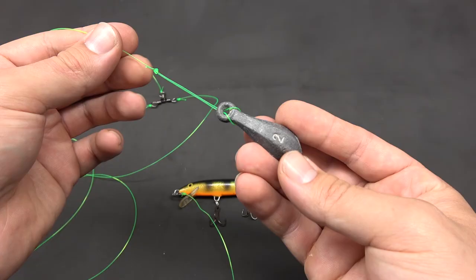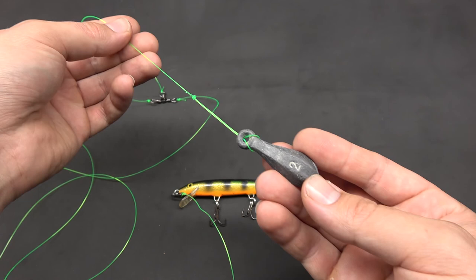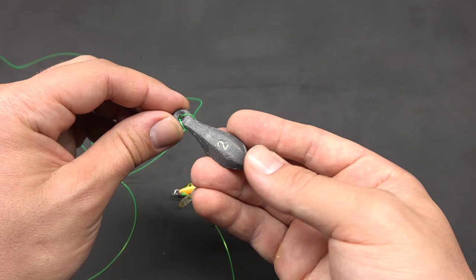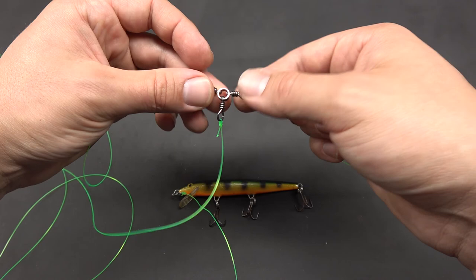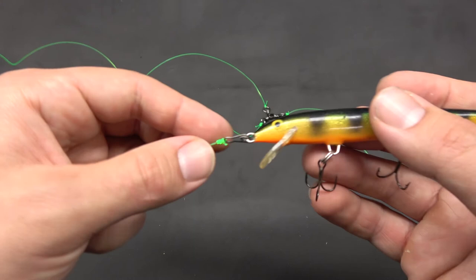For your completed three-way rig for walleye, you've got your dropper loop with a sinker that you adjust depending on the depth and current you're fishing. That's about one foot long, connected to one eye on the three-way. Then off another eye on the three-way, you've got a longer section of line attached to a snap ring in your crankbait. Make sure this is a floating crank with a small bill. And then your last eye gets attached to your main line connected to your rod.